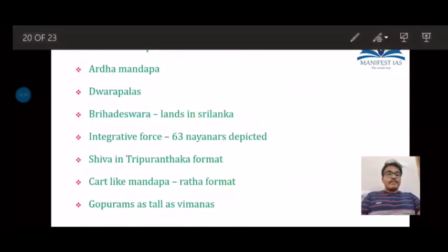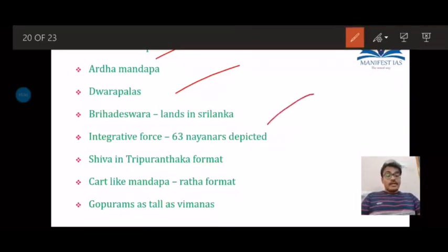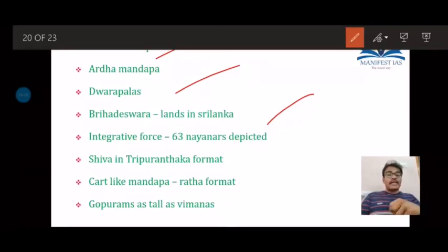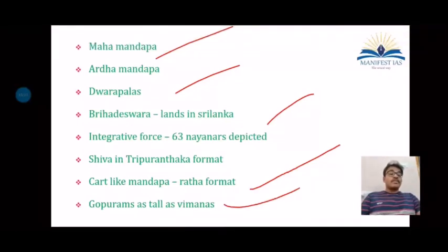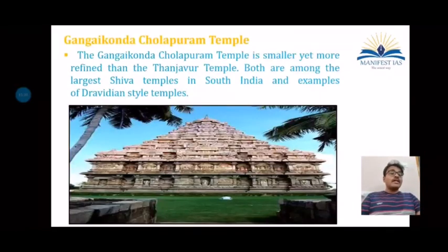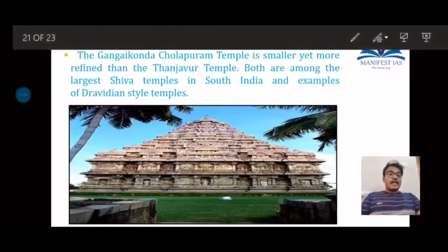The mandapas present include a maha mandapa and ardha mandapa, with dwarapalas. An interesting feature is that the Brihadishvara temple contained land grants in Sri Lanka too, showing it formed part of an integrative force across the entire empire. Some mandapas are constructed in ratha or cart-like format, and gopurams as tall as vimanas are also present in some Cholan temples, though not at Brihadishvara.